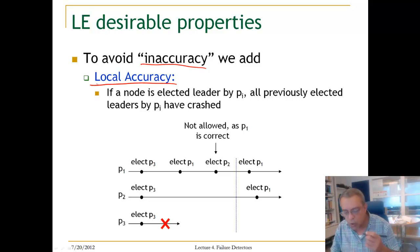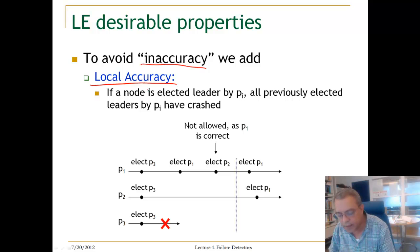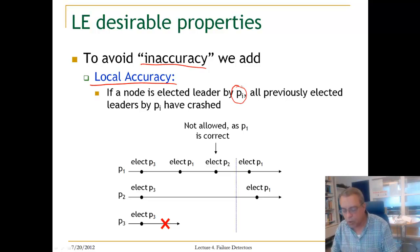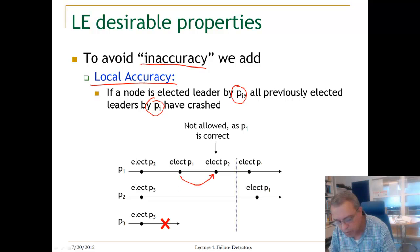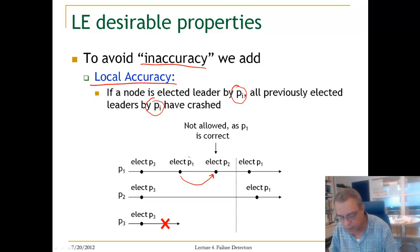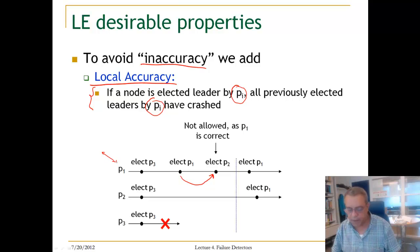This additional property is called local accuracy. Local accuracy states: if a node is elected a leader by some process Pi, all previously elected leaders by Pi must have crashed. So P1 is not allowed to switch to P2, because P1 itself did not crash. Once we add this property, the undesirable execution will not be allowed.